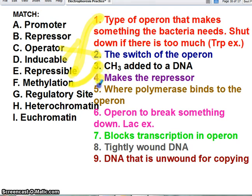What makes the repressor? The regulatory site. Where does the polymerase bind? It binds to the promoter. Operon that breaks something down. It's inducible. It's usually going to be off and it'll get turned on.